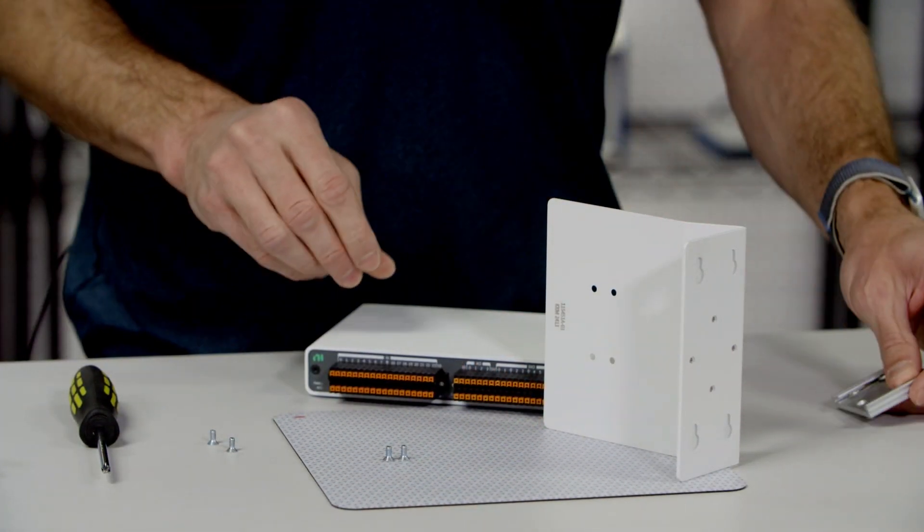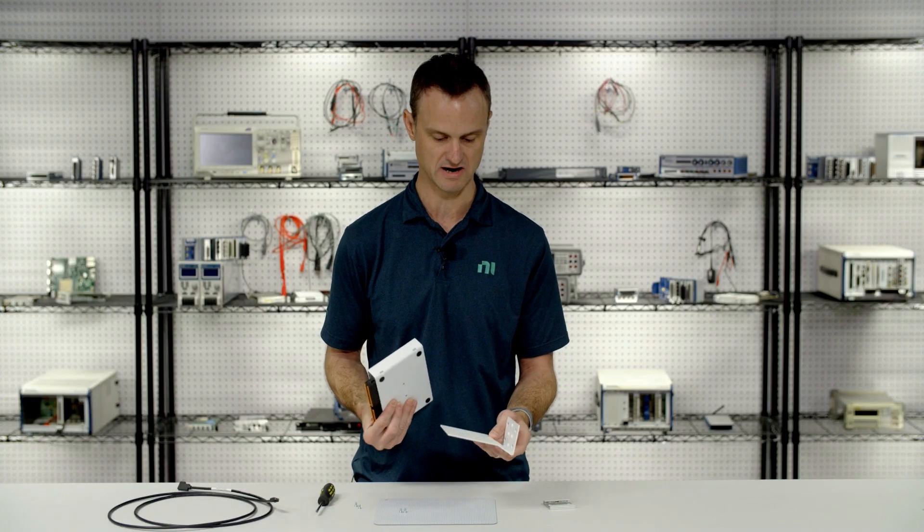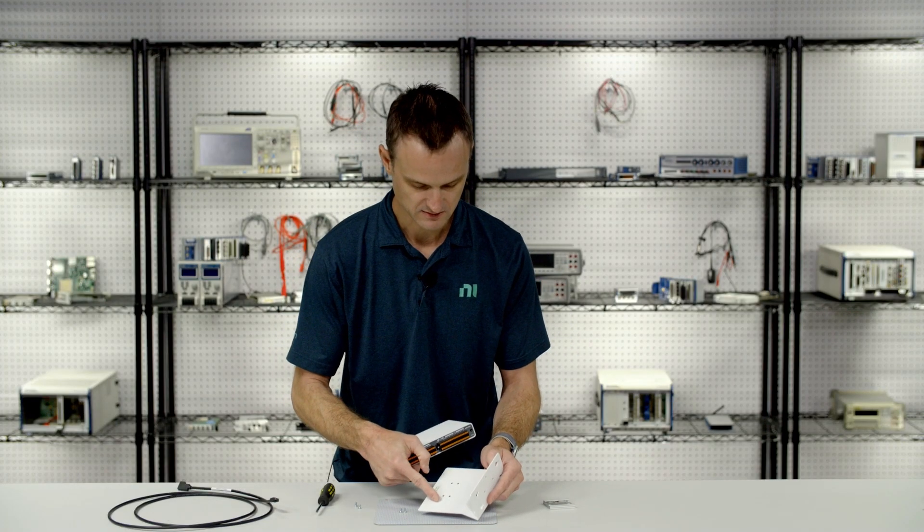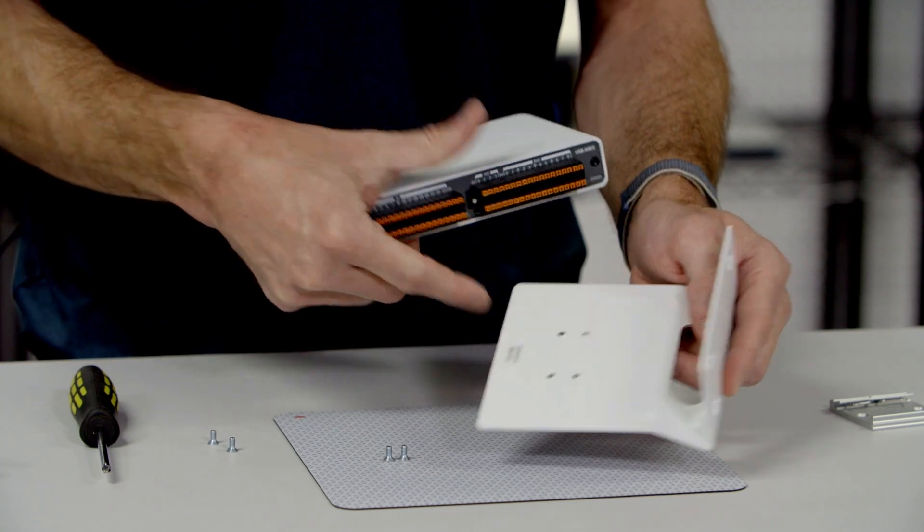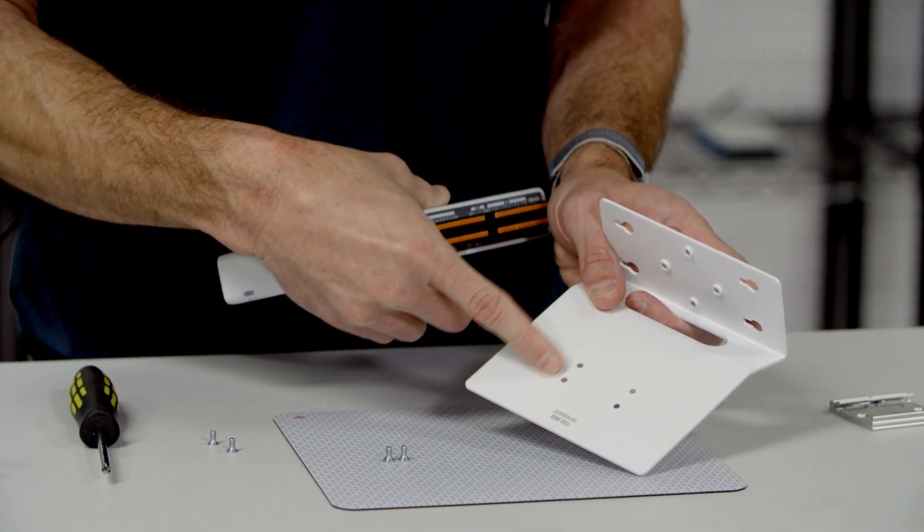All right, so let's get to it. I'm going to start by mounting MEO DAC on the bracket. I have two sets of holes. There's two holes on the back of MEO DAC, and there's two pairs here.